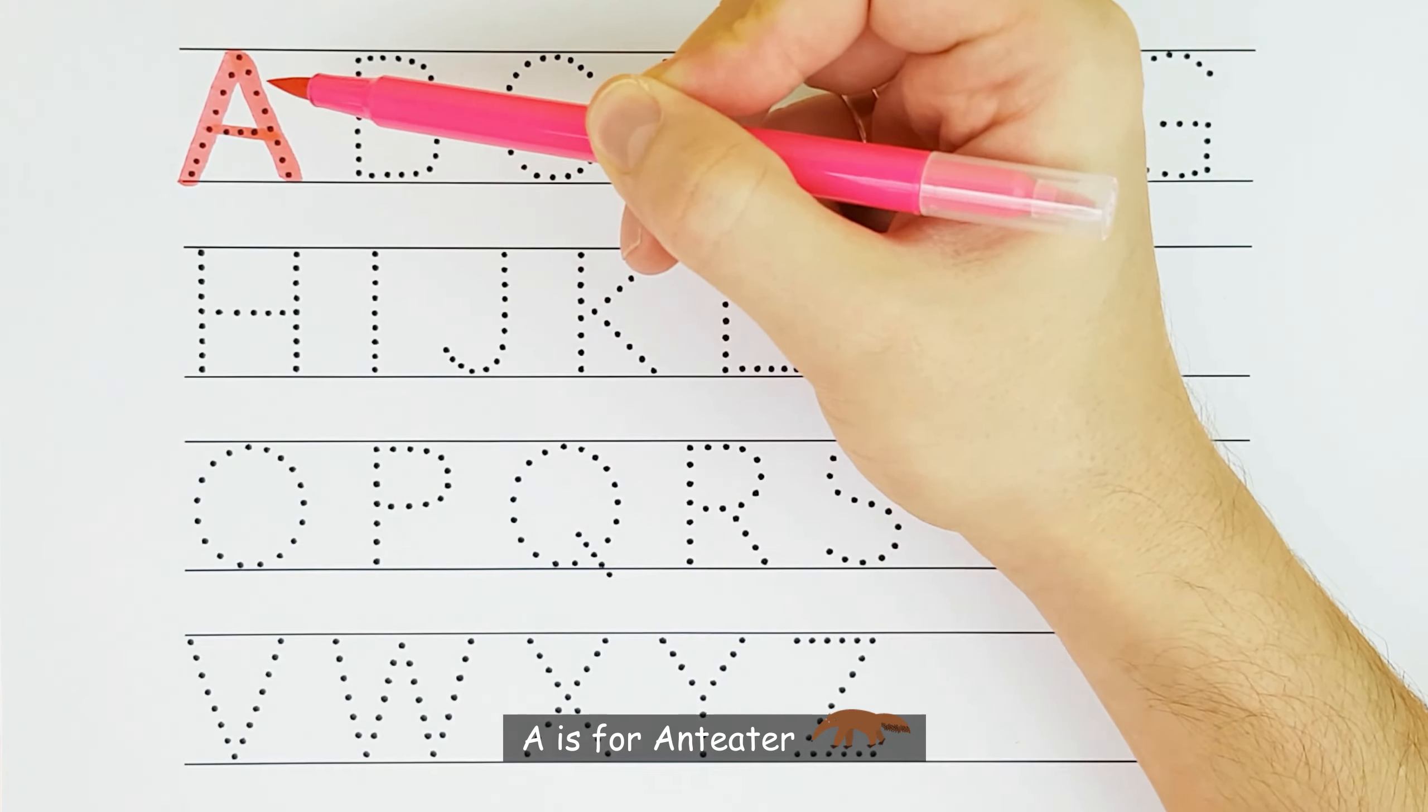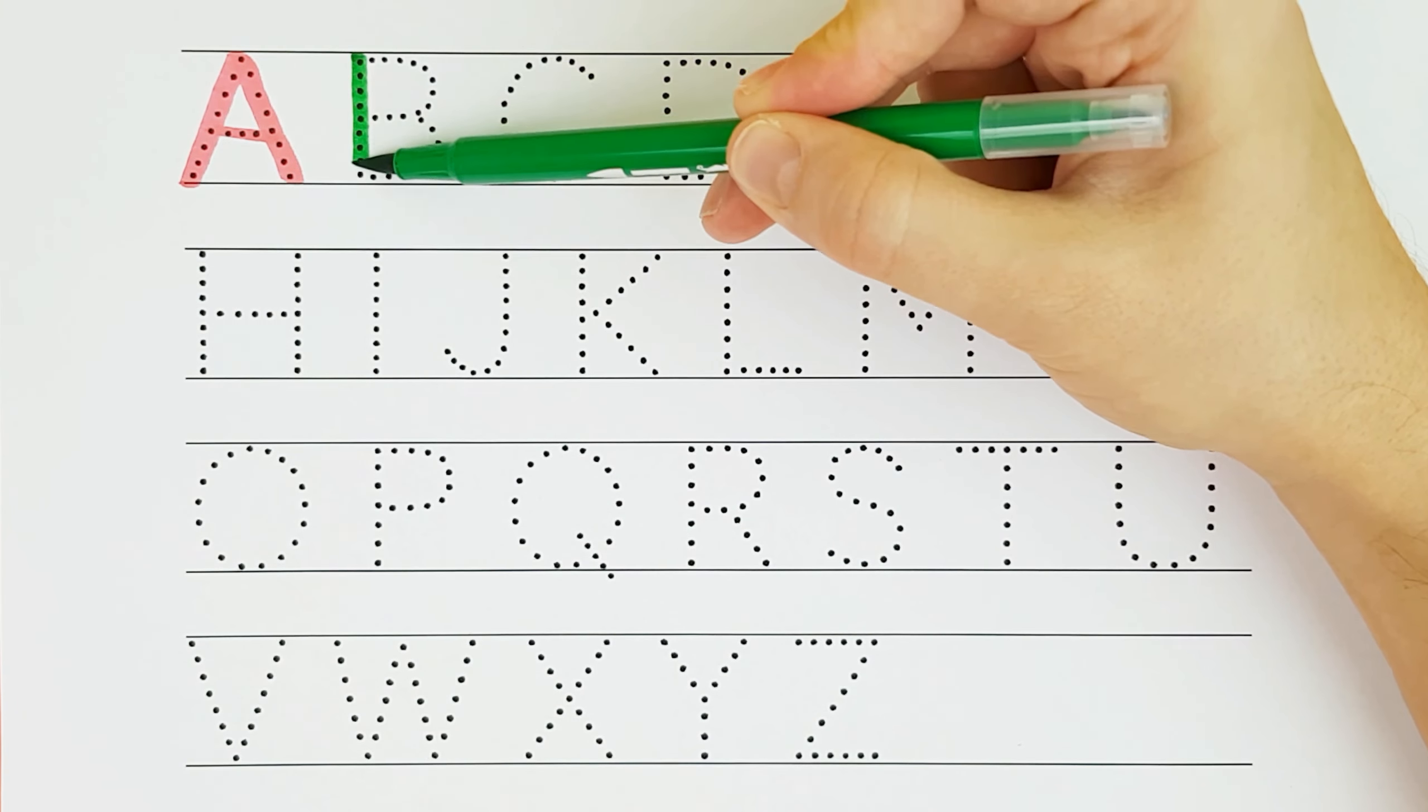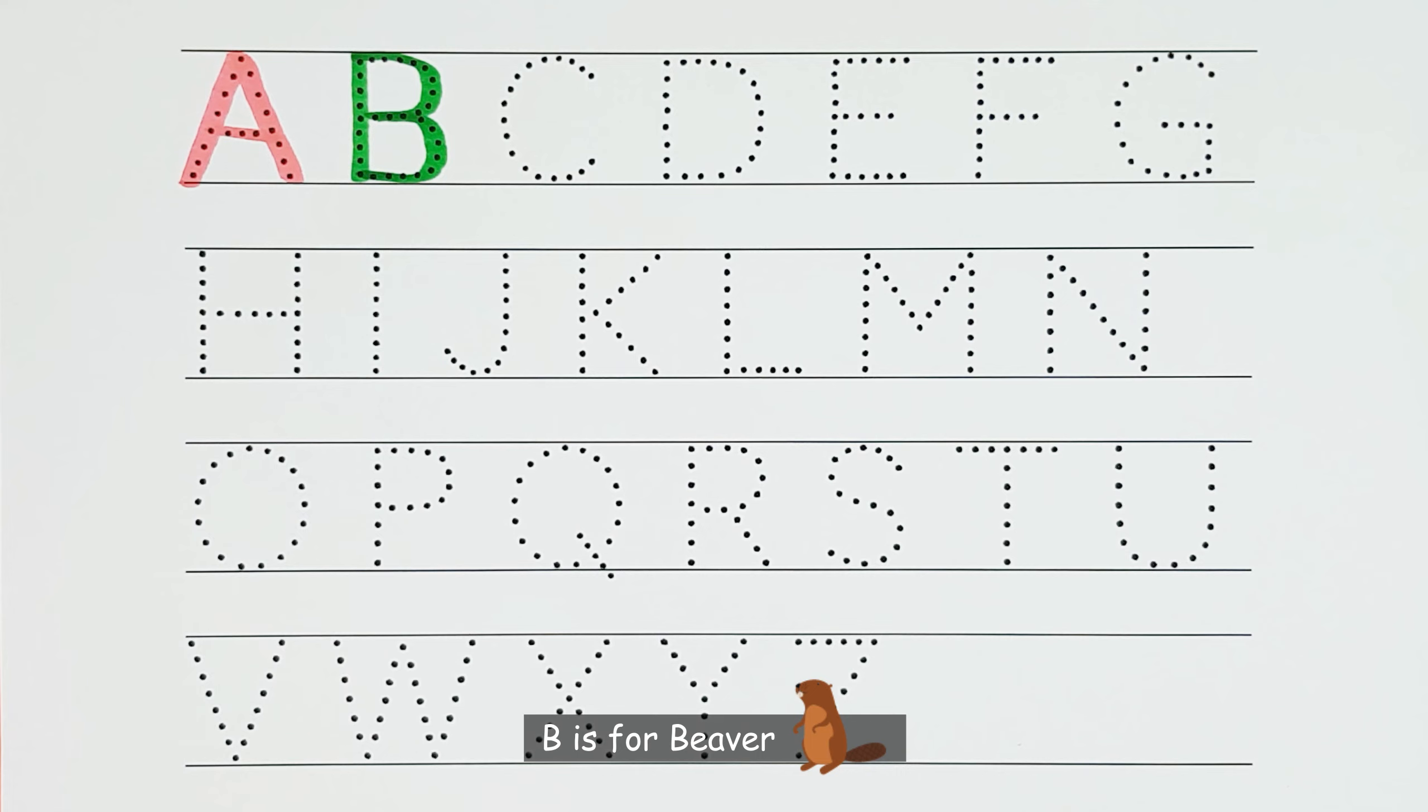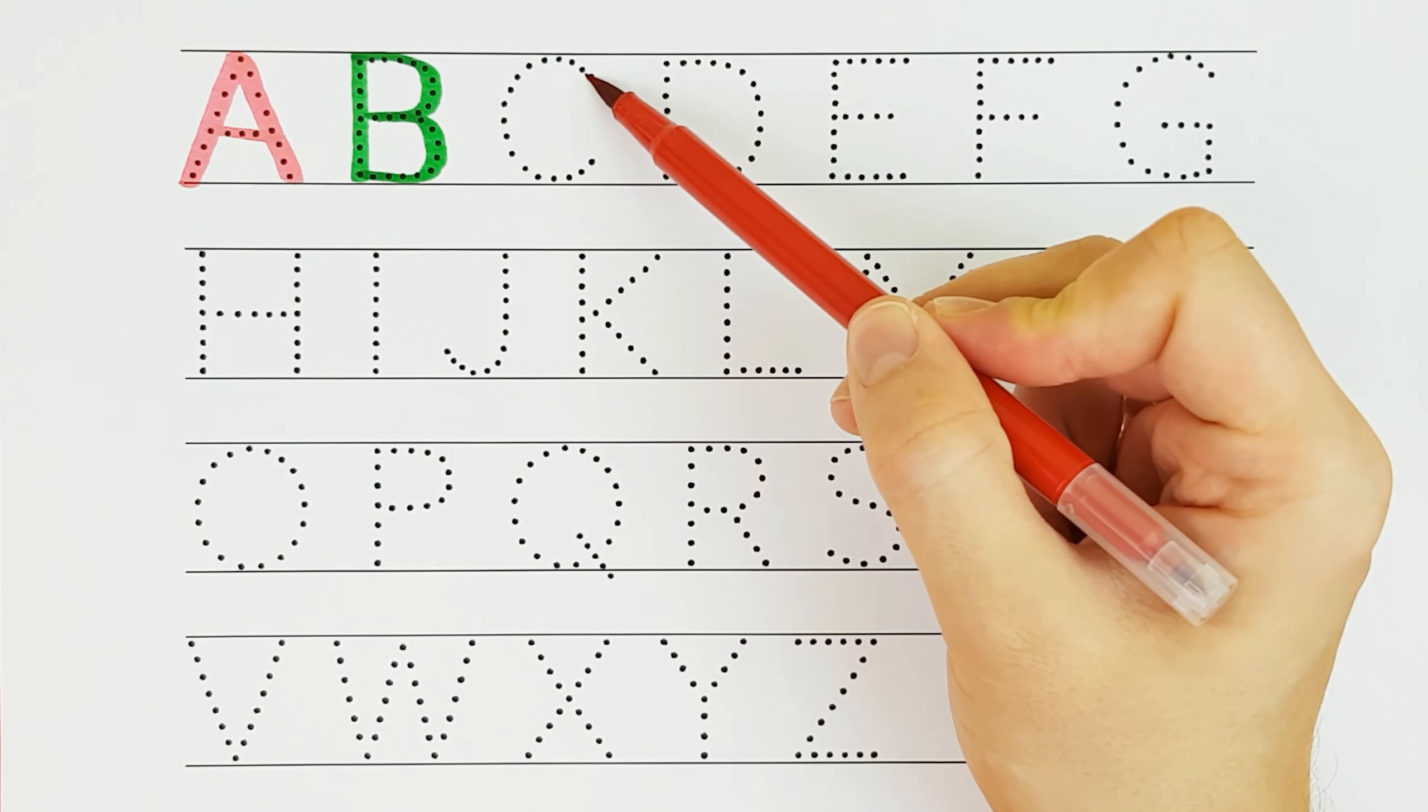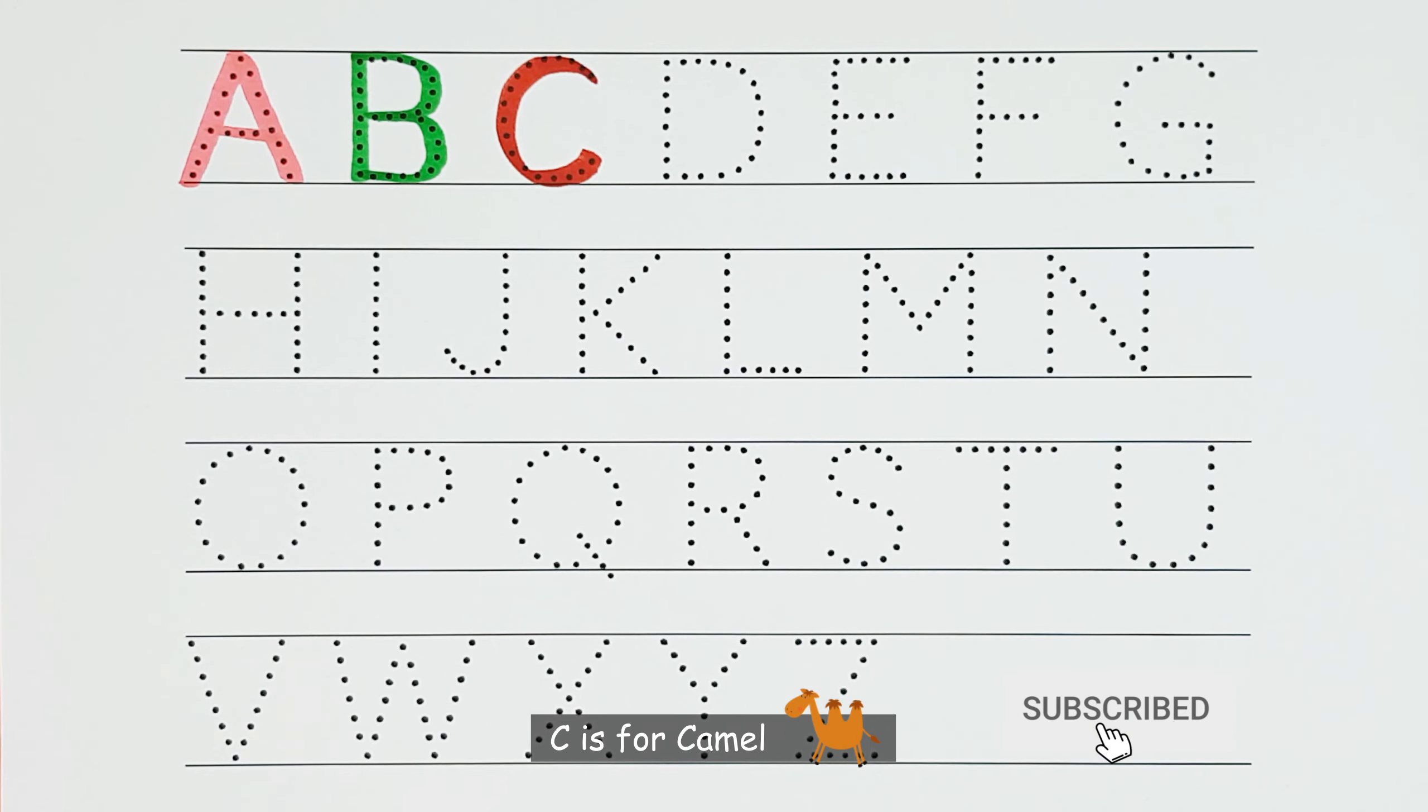A. A is for anteater. A. B. B is for beaver. B. C. C is for camel. C.